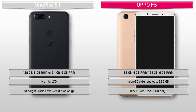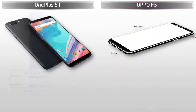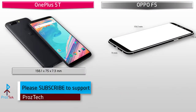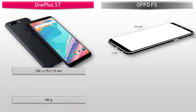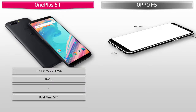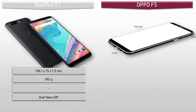Oppo has launched this device in Gold, Black, and Red colors. Talking about the dimensions of the OnePlus 5T, it comes with 156.1 by 75 by 7.3 mm thickness and weighs 162 grams, with dual nano-SIM standby support.